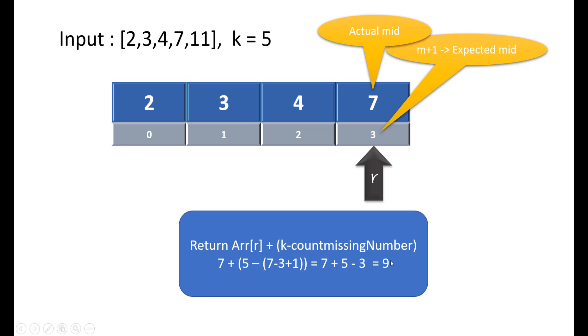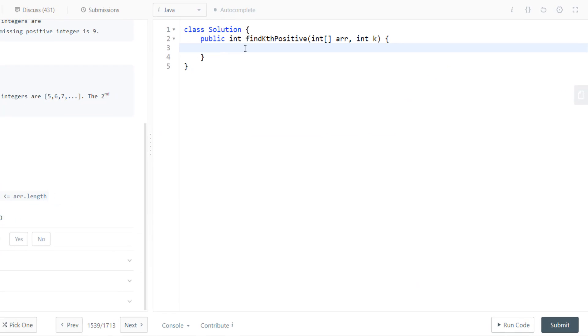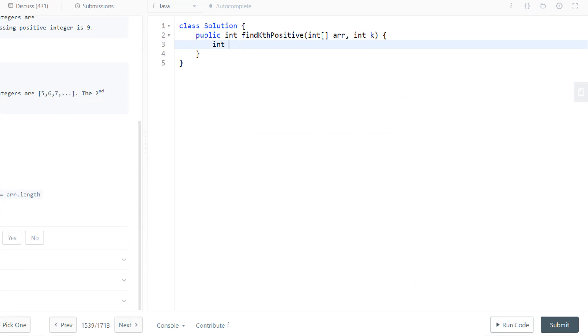Now that we know the approach, let's try to code it. Let's take a few variables. First is n which would be array.length, then we'll take left which would be 0 and right which would be n-1. The first base case that we can check is whether our k is outside the bounds. For that we need to compute our missing numbers, so we take missing equals actual minus expected.